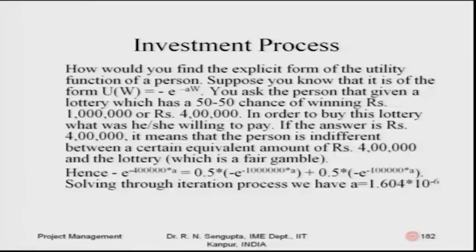How would you find the explicit form of the utility function? Suppose you know it is of the exponential form U(W). You ask the person: given a lottery with a fifty-fifty chance — tossing an unbiased coin — of winning ten lakhs or four lakhs, what will they be willing to pay? If the answer is four lakhs, it means the person is indifferent between the certainty amount of four lakhs and the lottery.